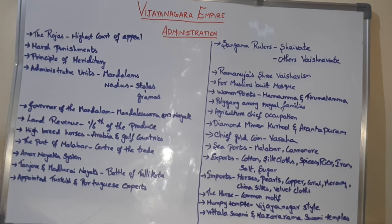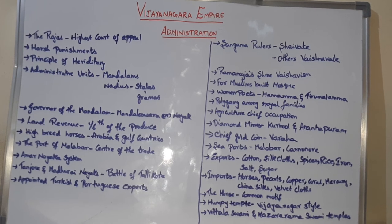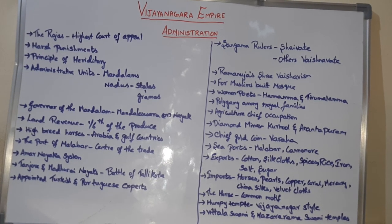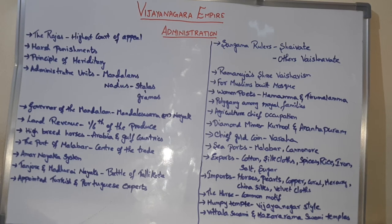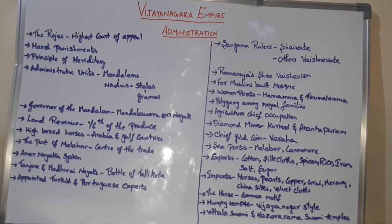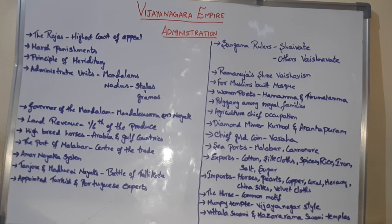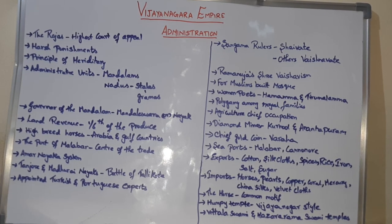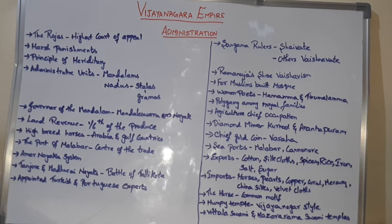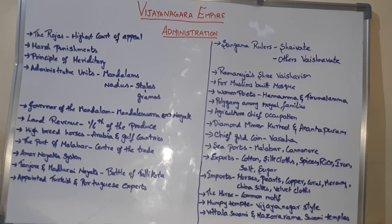Metal workers and other craftsmen flourished during this period. Diamond mines were located in Kurnool and Anantapur districts. The chief gold coin was the Varaha, but weights and measures varied from one place to another.